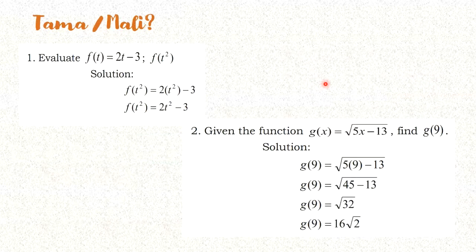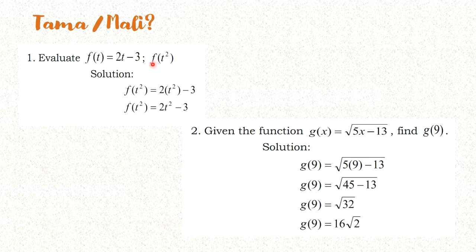Let's have more exercises here. This time, yung evaluation of functions given — we're going to check kung tama ba or mali yung pag-evaluate. Let's have number 1. This is the given function: f of t equals 2t minus 3, a linear function. We're going to get f of t squared. Papalitan ko lang itong t by t squared. Ang f of t squared is equal to 2t squared minus 3. Tama.